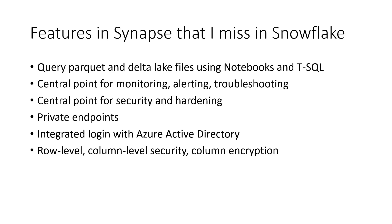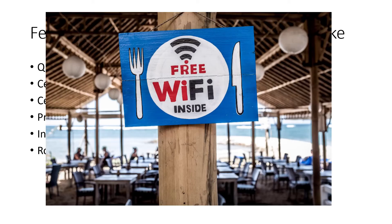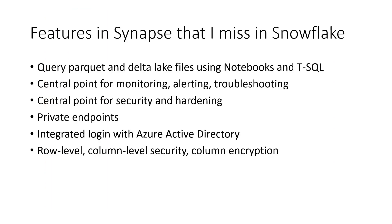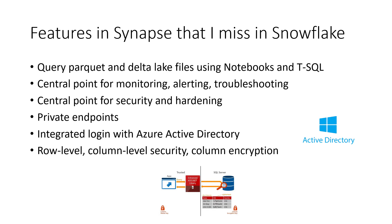You're going to spend a lot of money for private endpoints in Snowflake. All their other offerings do not offer private endpoints, which means that if you're going to move data in and out of Snowflake or query data, you're going to do that over a public IP address — and a lot of organizations have audit and compliance requirements that say they can't do that. Synapse also has integrated login with Azure Active Directory, which allows you to use one login for your Power BI reporting, SQL databases, ADLS Parquet files, and Spark tables. Finally, Synapse has row-level and column-level security and column encryption — you can say row by row who can see what data, and you can encrypt entire columns. Those things just don't appear in Snowflake.